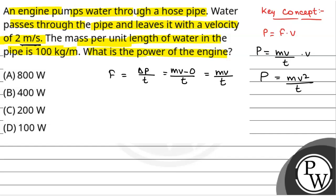So, now we can write mass. If we have been given the mass per unit length, it will be equal to rho into V. Mass will be equal to rho into V where rho is the density and V is the volume.